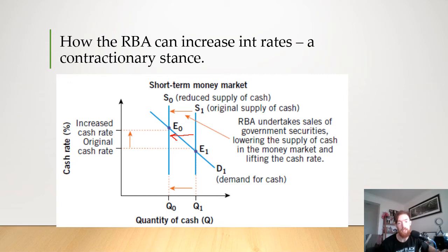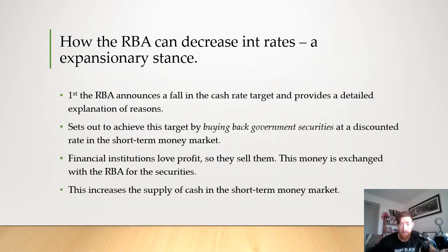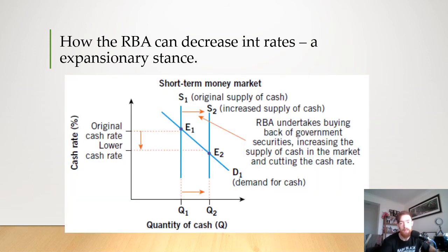Next, the expansionary stance — the exact opposite. The RBA announces they want to decrease the cash target rate and provides a detailed explanation of their reasons. They set out to achieve this by buying back government securities in the short-term money market at a higher price than they were sold for. Financial institutions sell them back because they get more in return than they paid. This increases the supply of cash in the short-term money market and leads to interest rates falling because there is more money available. On the diagram, buying back government securities increases the supply of cash, creating a favorable shift and driving the overall cash rate down in the short-term money market.